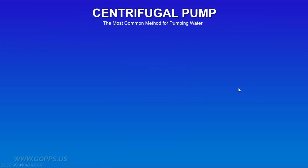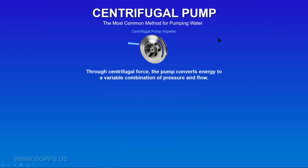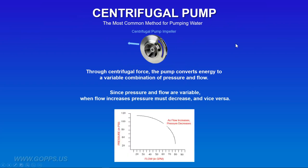Centrifugal pumps are the most common method of pumping water in the world. A centrifugal pump uses an impeller to move water. Through centrifugal force, the pump converts energy to a variable combination of pressure and flow. Since pressure and flow are variable, when flow increases, pressure must decrease and vice versa. That's important to understand, because what we're looking at here at the bottom of the screen is what's known as the pump curve — the most important thing in the pump world. People sometimes fully understand it and sometimes aren't sure what it's all about, but it's relatively simple and very important for pump selection.